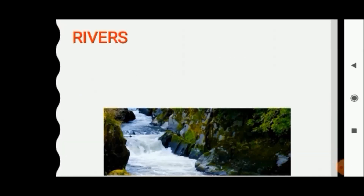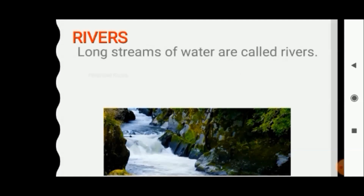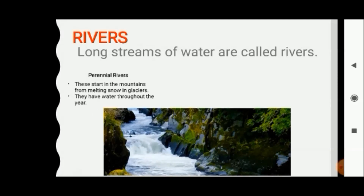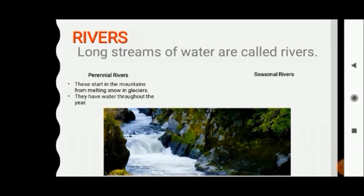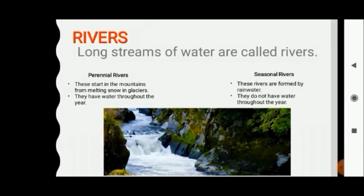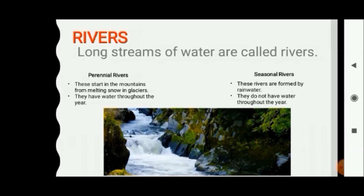Rivers are the long streams of water. Many rivers start in the mountains, and the rivers which start in the mountains from the melting snow in glaciers have water throughout the year — they never go dry. The rivers which have water throughout the year are known as perennial rivers. Most rivers in North India are perennial rivers.